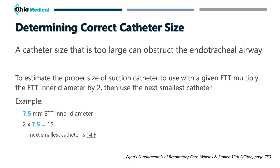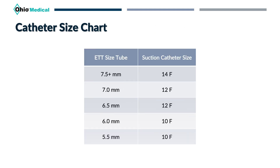A good rule of thumb when deciding which catheter size to use: multiply the inner diameter of the endotracheal tube by two, then use the next smallest catheter size in French. So if your patient was intubated with a 7.5 millimeter endotracheal tube, you would multiply 7.5 by 2, which is 15, then use the next size down — a 14 French. Note that suction catheters are sized in even numbers only, for example 10, 12, and 14 French. Here's a table matching the appropriate suction catheter size with the endotracheal tube.